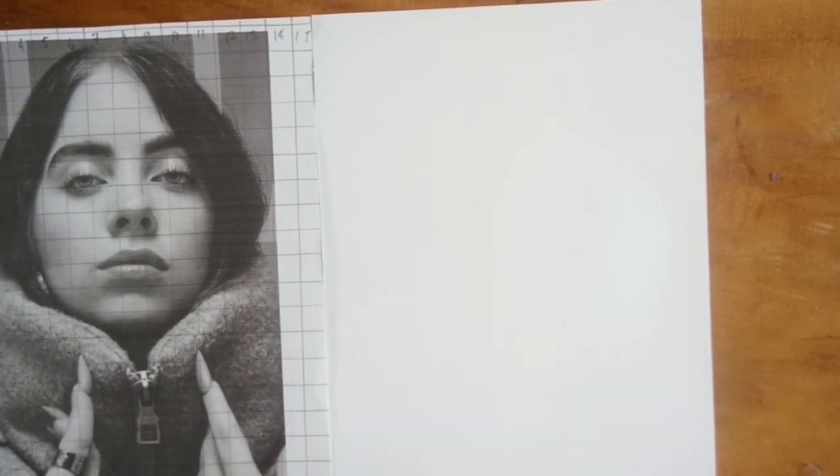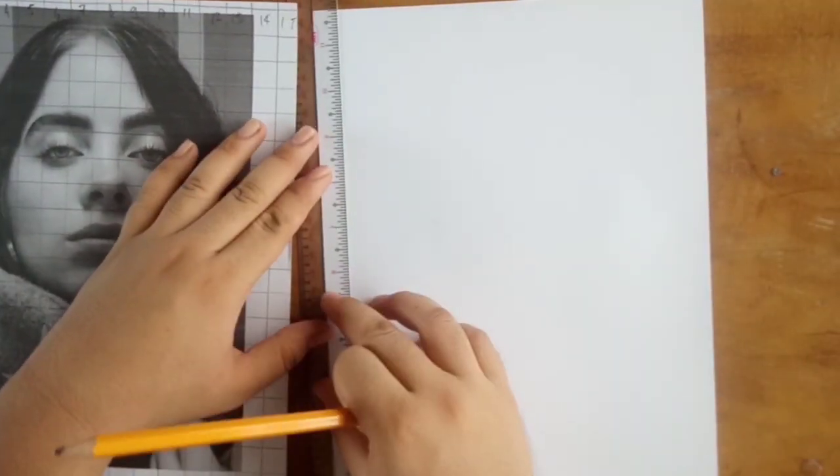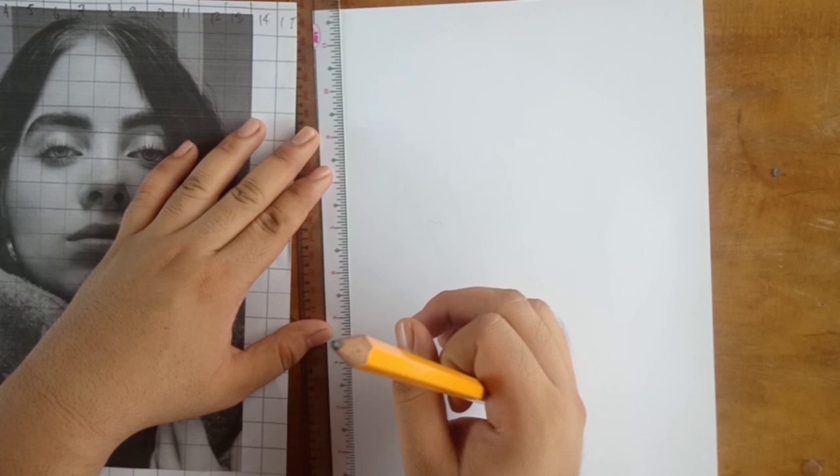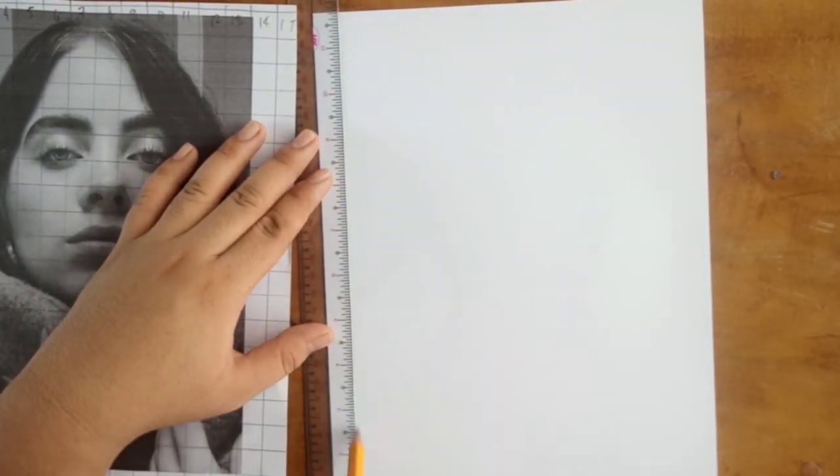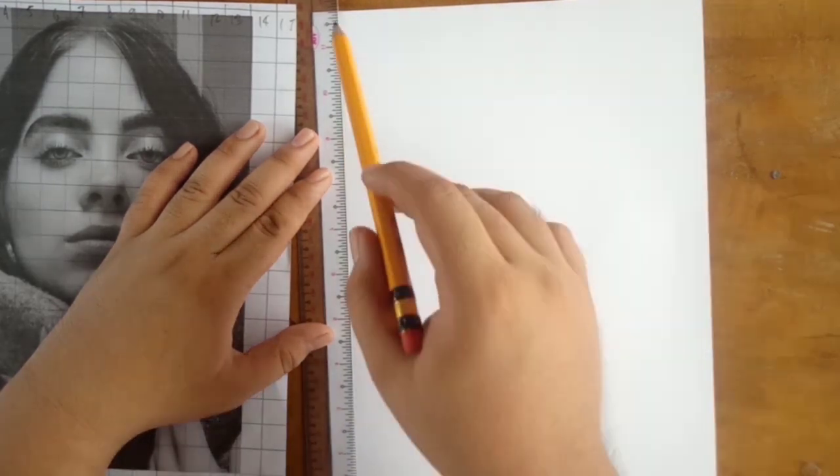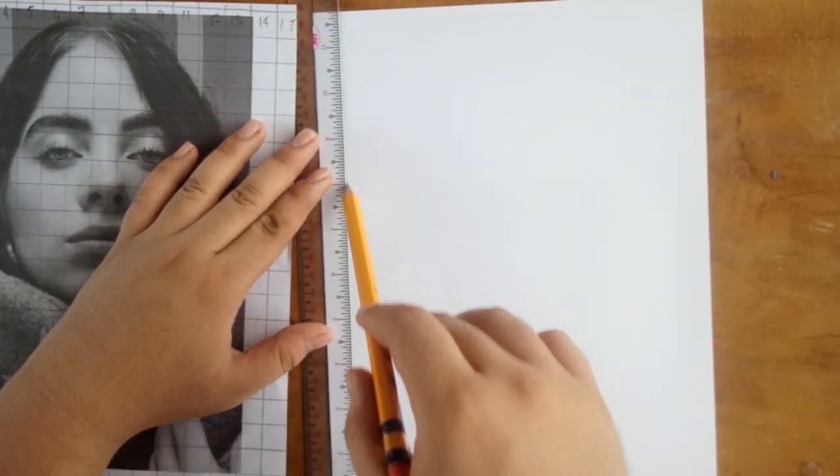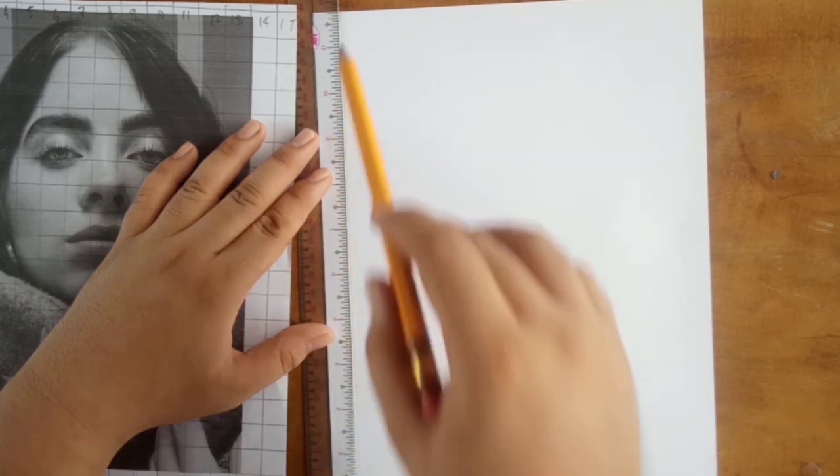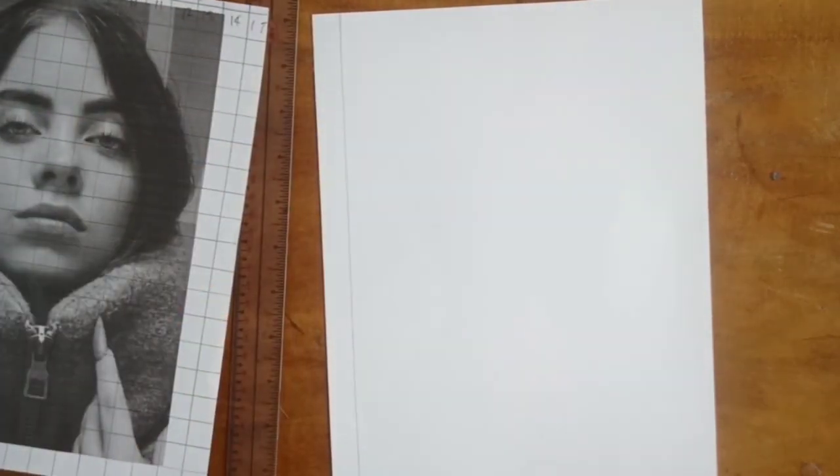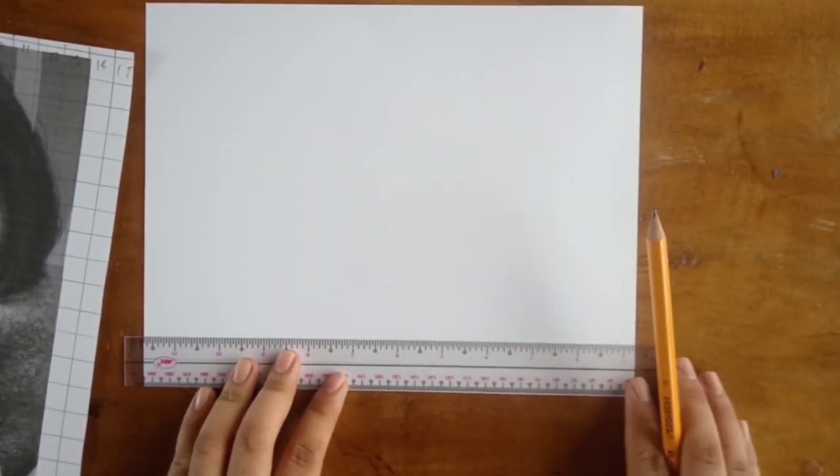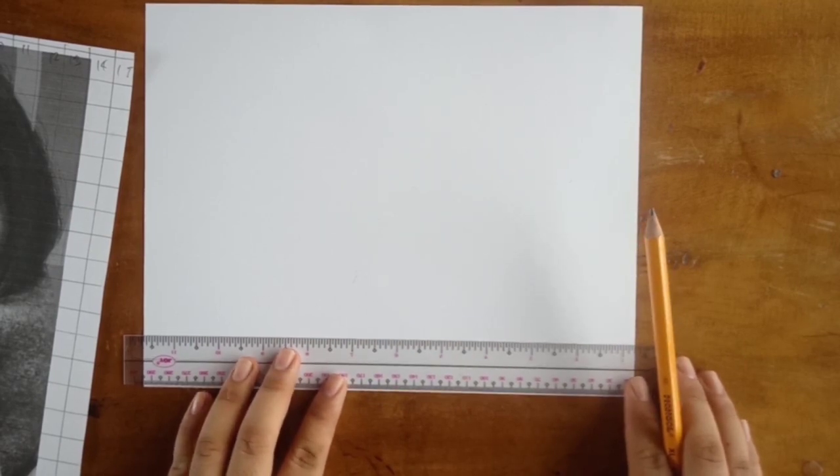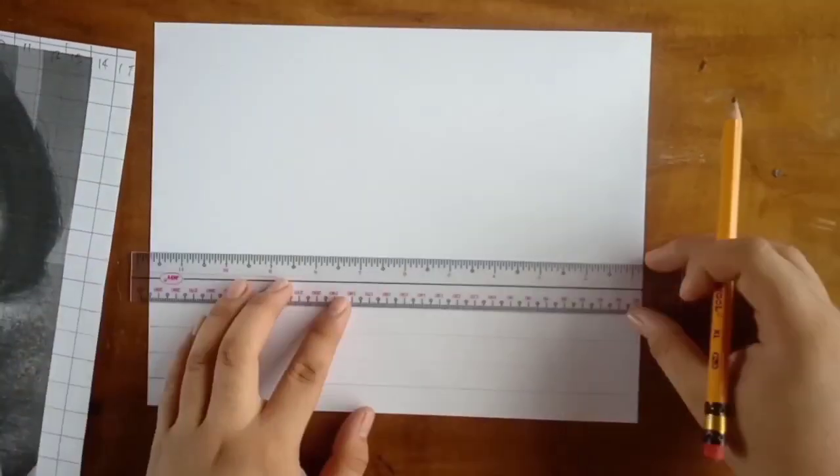Sisimulan ko na ang pag-grid sa blank paper natin, and make sure na dapat yung size ng grid natin is same dun sa ginawa natin sa reference, para accurate. Paalala lang sa paggawa ng grid sa blank paper natin, dapat hindi natin diinan, kasi buburahin pa natin yun after tayo mag-i-sketch. Nag-i-struggle ako sa paggawa ng grid, kasi di ko talaga alam kung straight ba yung ginagawa ko, or tama ba yung measurement.